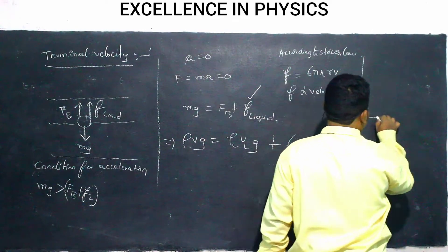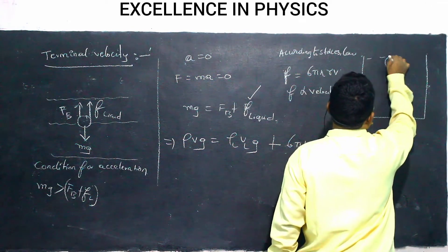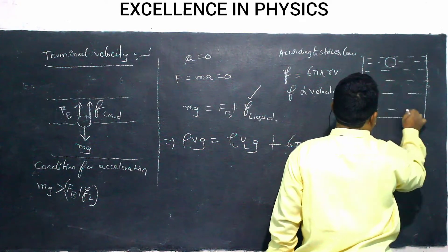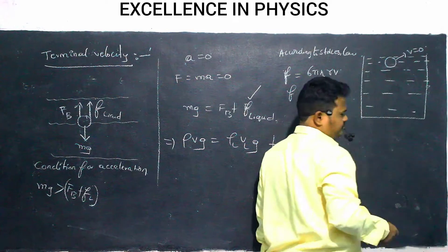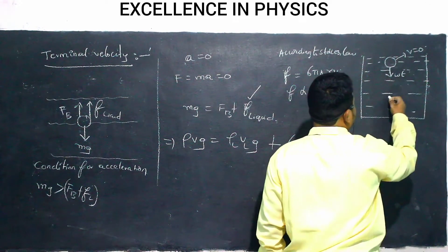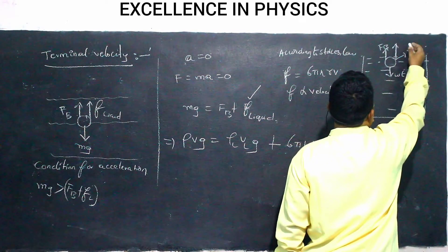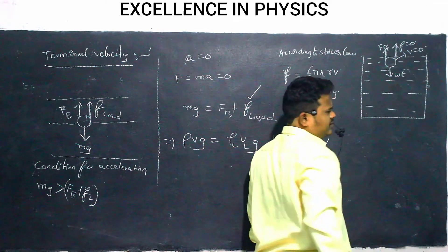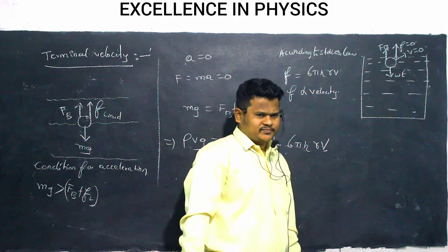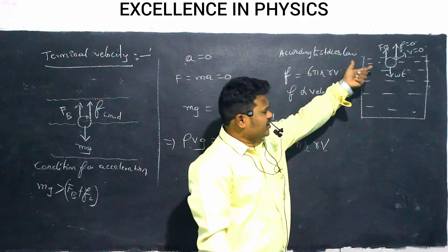Diagrammatically: the body is placed just inside the liquid. At this point, velocity of the body is zero. Forces acting: weight acts downward, force of buoyancy acts upward. And the viscous force is initially zero — because velocity is zero, viscous force is also zero.